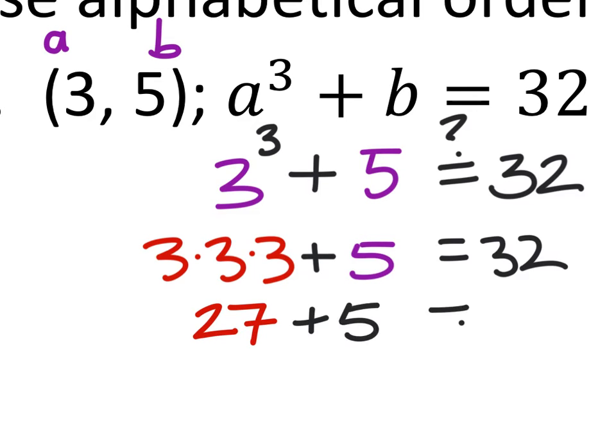Plus 5, does this equal 32? Well, 27 plus 5 is 32, which does equal 32. That's true.